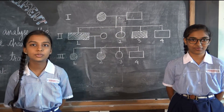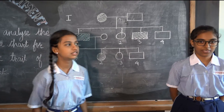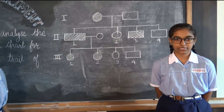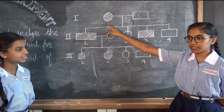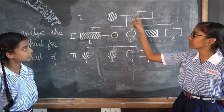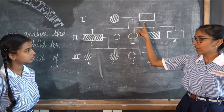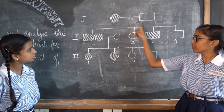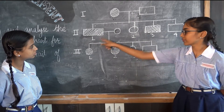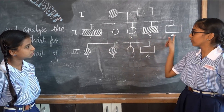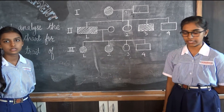Now the next topic will be explained by my friend. Hi, I am Rumi and I will explain the next part. A female with widow's peak hairline married a straight hairline male, producing four children, of which two sons have widow's peak hairline.